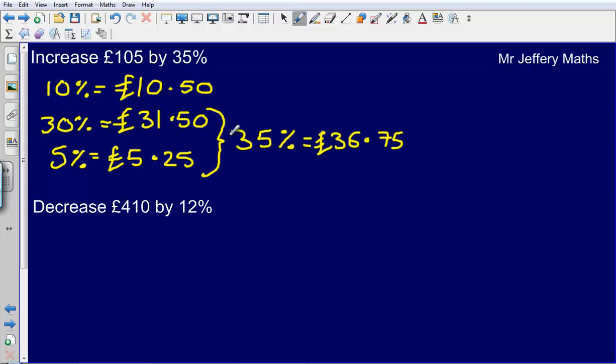Now I'm not finished here. I've only worked out what 35% is. I now need to increase £105 by this amount. So I'm going to do £105 plus £36.75, and that gives me an answer of £141.75.